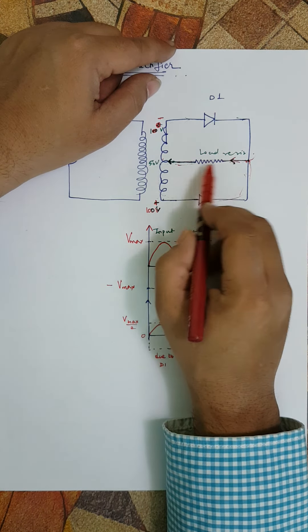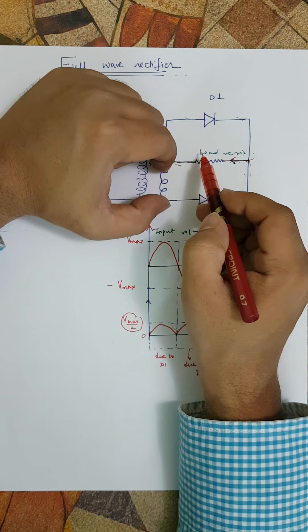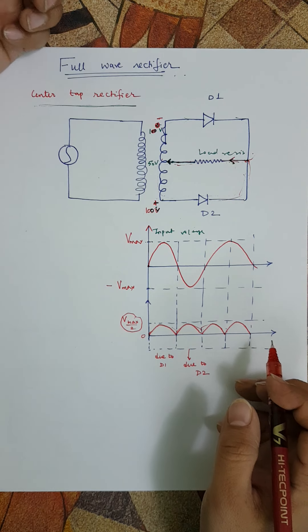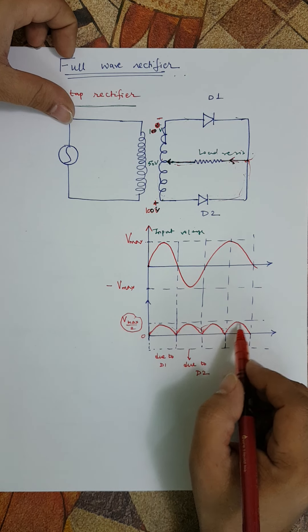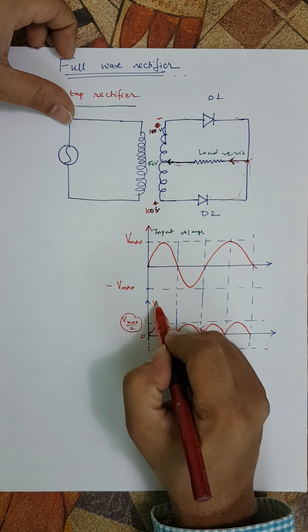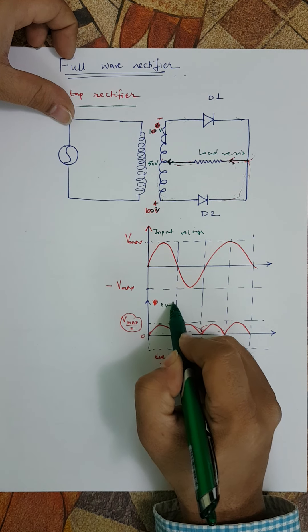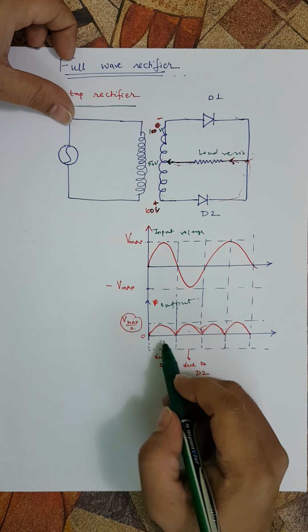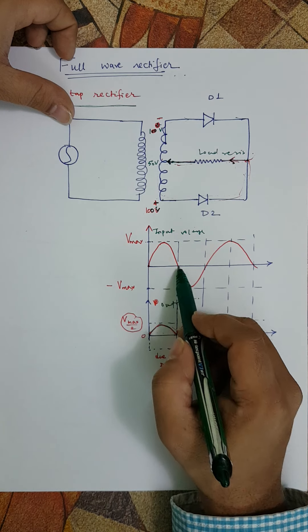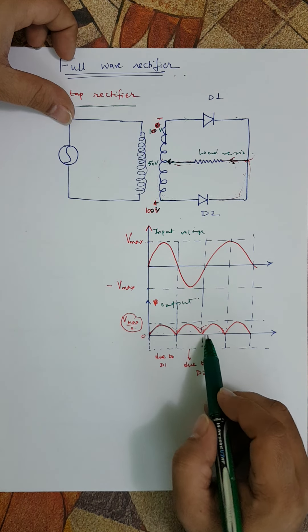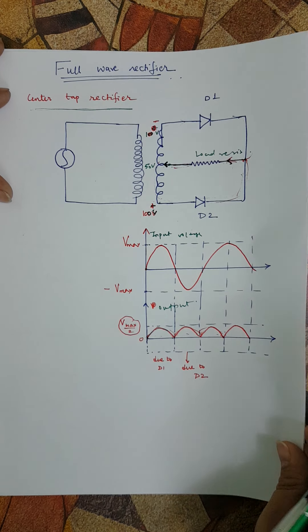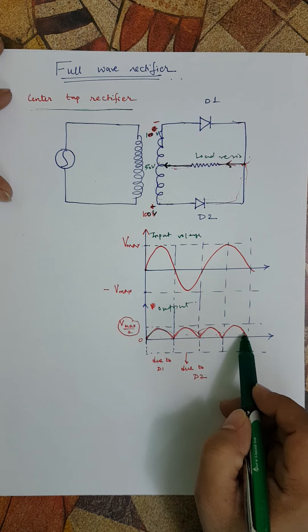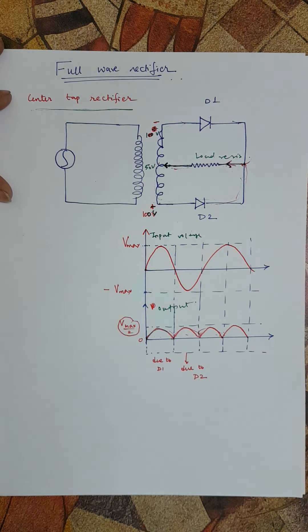Since potential difference doesn't change its polarity, the output is like this. The output has only Vmax by 2 because instead of utilizing the entire 100 volts we utilize only 50 volts at a time — 50 volts at the positive half cycle and 50 volts at the negative. This is a compromise for getting more uniform output. We've achieved rectification, converting AC into DC, but this is not a very good way — what if we want a perfectly uniform current?